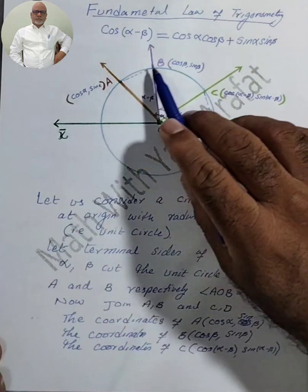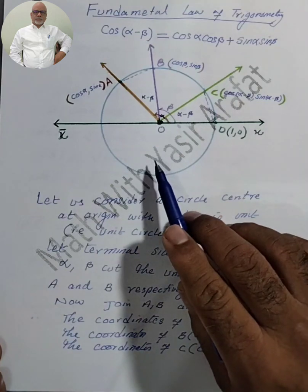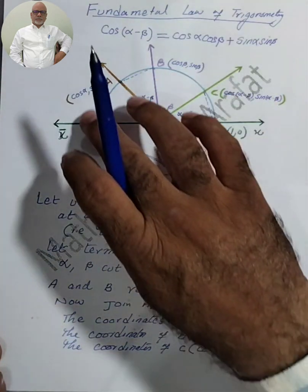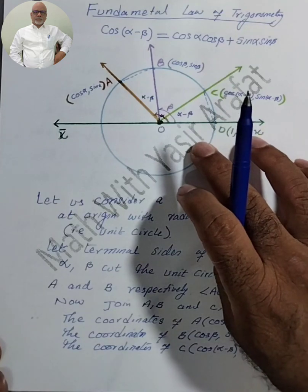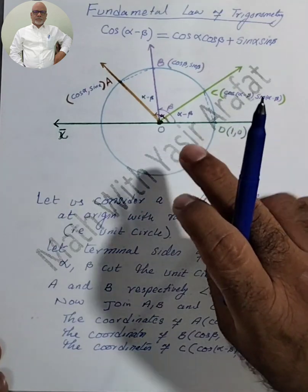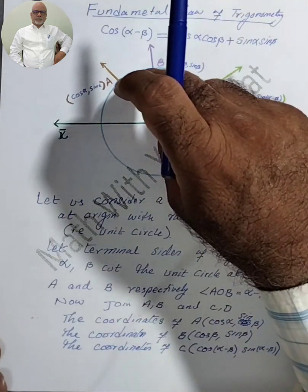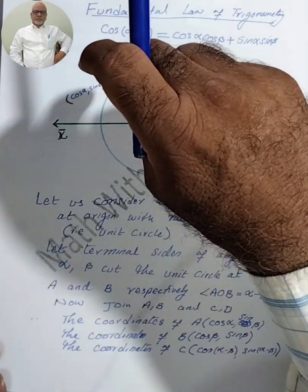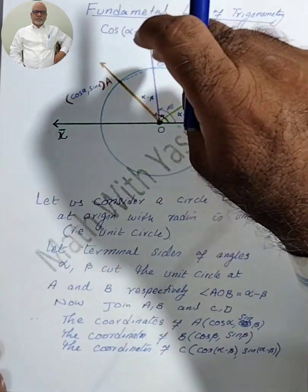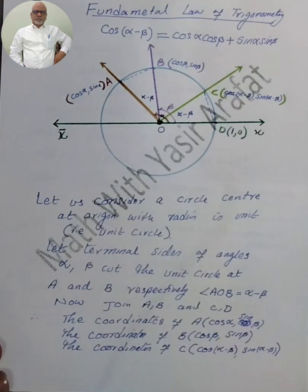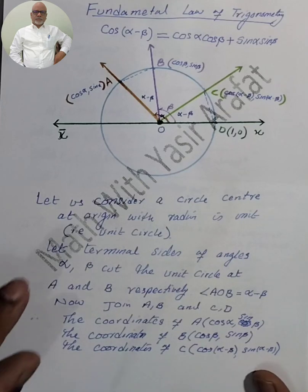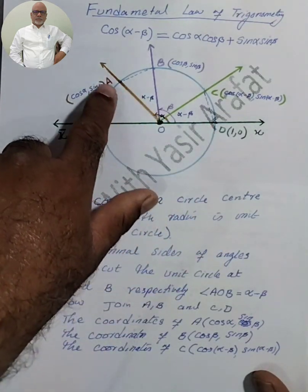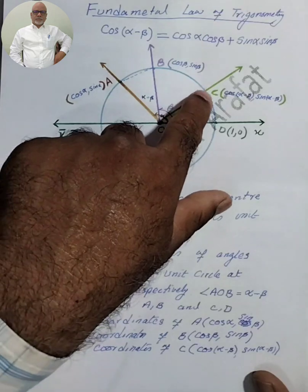Again, we are considering a unit circle with radius 1, centered at the origin. We have discussed how to find the coordinates of A, B, C, and D. Now, two triangles are present here: AOB and COD.